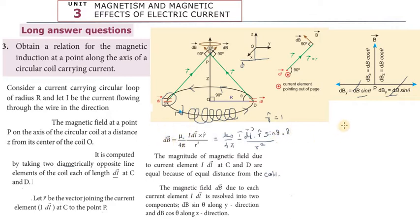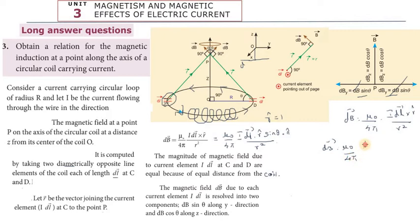Now, the first equation: dB vector = (μ₀/4π) × (i dL × r̂) / r². So this is the magnetic field. dB vector = (μ₀/4π) × (idL sinθ) / r² × n̂. Using the cross product identity A × B = AB sinθ n̂, that gives dL × r × sinθ. Since r̂ is a unit vector, r = 1, so it is dL × 1, meaning dL / r².